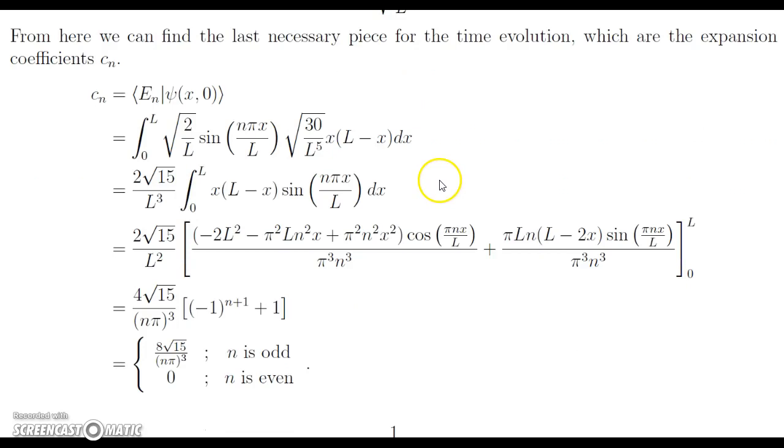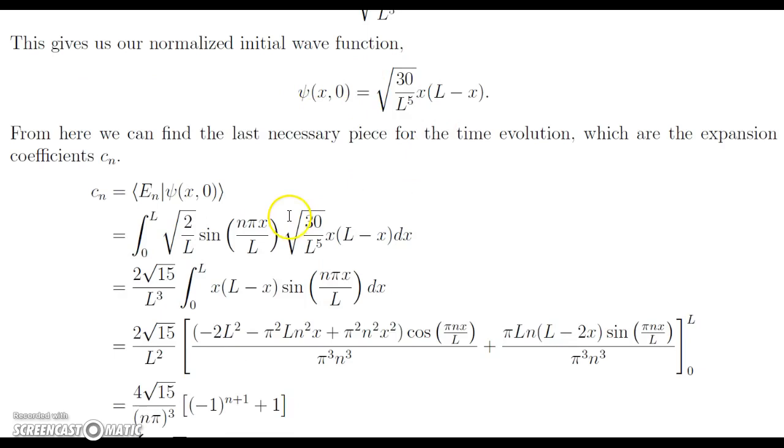So here, the next part, we do have a little bit of fun with some calculations here, as you see. But we want to find the next necessary piece to find the time evolution that we desire. And we need the expansion coefficient cn. And to do that, we solve this inner product here. We have cn is equal to the inner product of the eigenstate En with this initial wave function ψ(x,0). Now here, to do that, since we're using the position representation of the inner product, we take this integral here, and we have the eigenstate, the energy eigenstate, and then here we have our initial wave function that we just found.